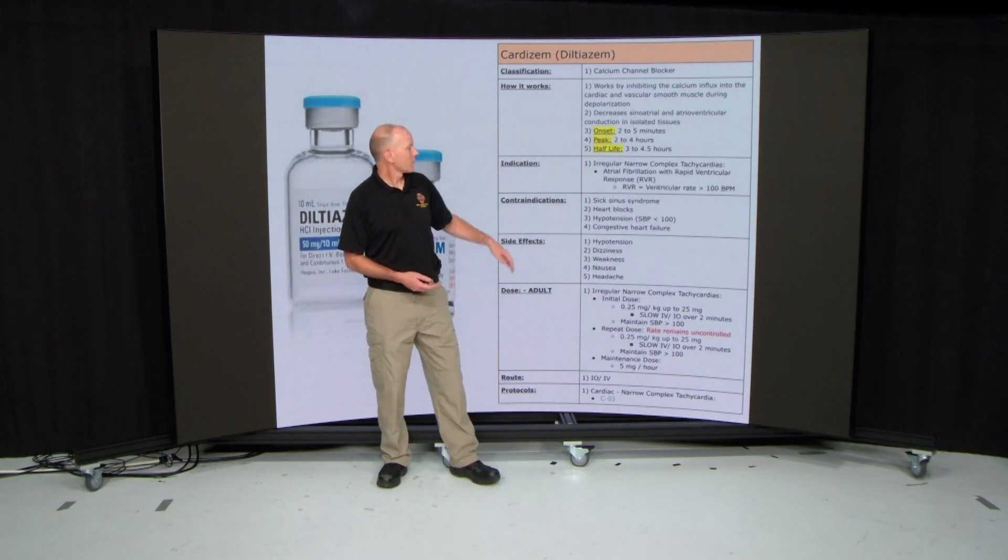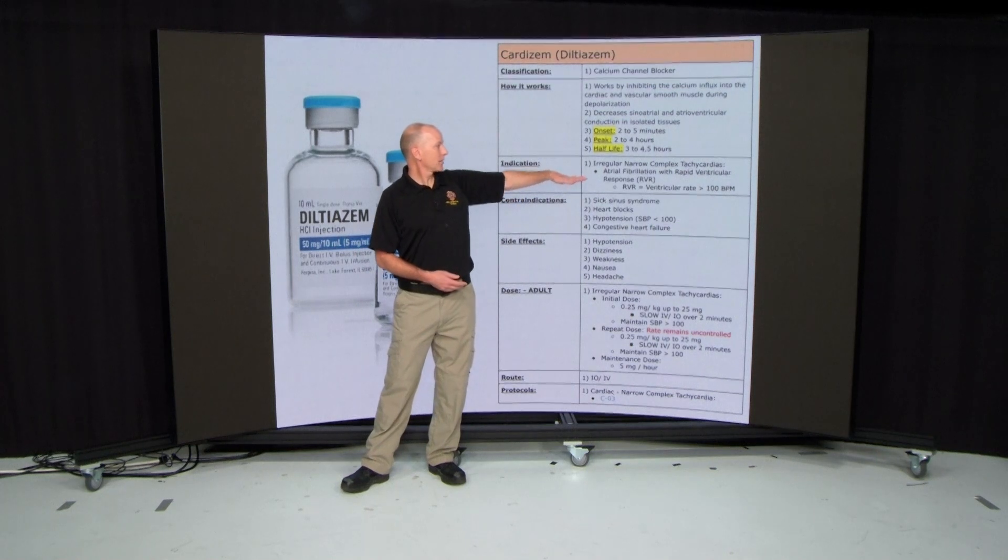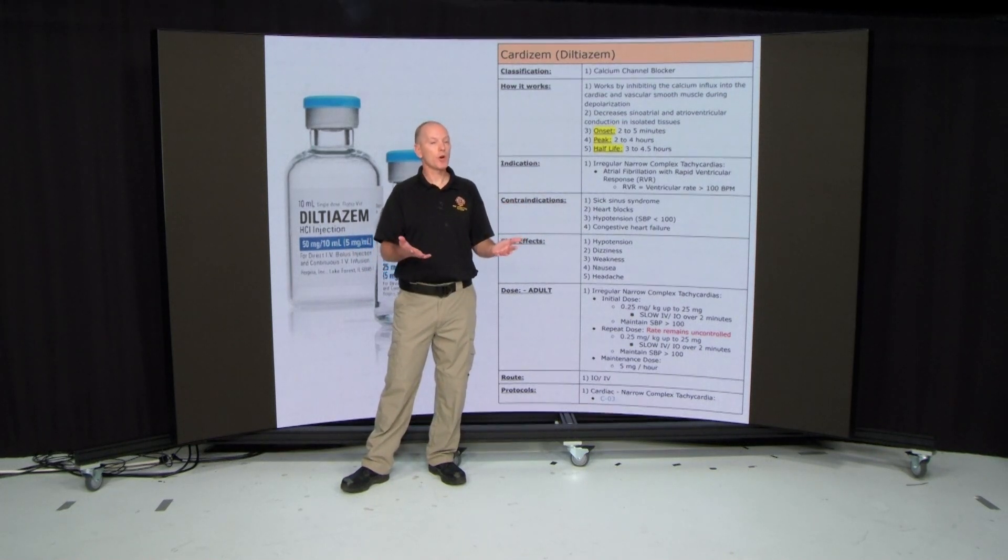Cardizem is a calcium channel blocker. We're going to be giving it for that irregular narrow complex tachycardia, that afib with RVR.